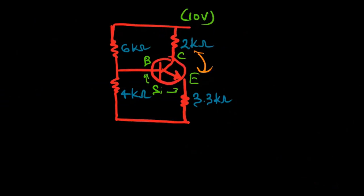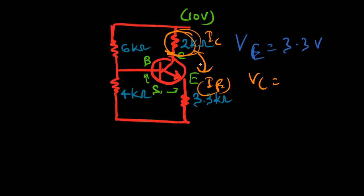Moving to VCE, the last part - VCE is the potential difference across C and E. Now we have VE that is 3.3 volts and we know the currents IC and IE. We need to find VC. To find VC, we have to find the potential difference across these 2 kilo ohms.